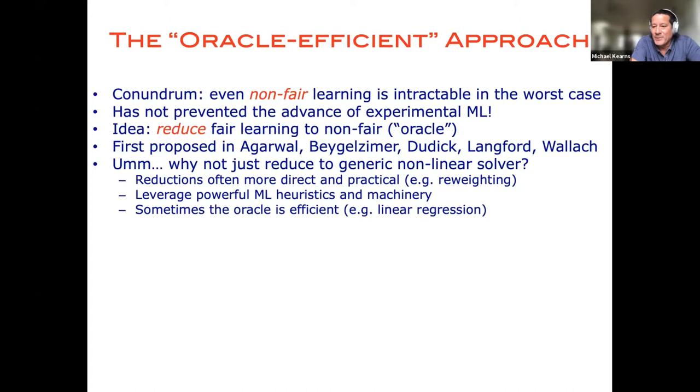And sometimes, especially a theoretical computer science audience might ask, well, if you know that some learning problems, some fairness constrained learning problem is NP-hard, for example, why not just reduce to some generic nonlinear problem solver like a general integer programming solution? And the answer is that the reductions you get by this oracle efficient approach are often much more direct and practical. In particular, they often only involve just re-weightings of the training data. And this lets us leverage powerful machine learning heuristics and machinery.